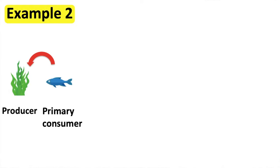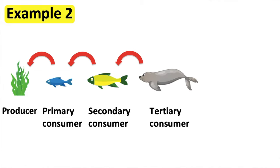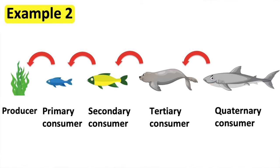Another example is algae, small fish, bigger fish, sea lion, sharks. The small fish eat the algae. The bigger fish eat the small fish. The sea lion eats the bigger fish. The sharks eat the sea lions.